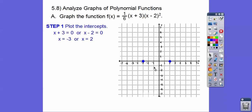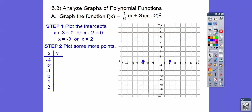Odd roots go up in this direction as long as the leading coefficient is positive. If it were negative 1/6, it'd start up here and go down this way. So here are the intercepts, and let's plot some more points to get a general idea of what's happening.